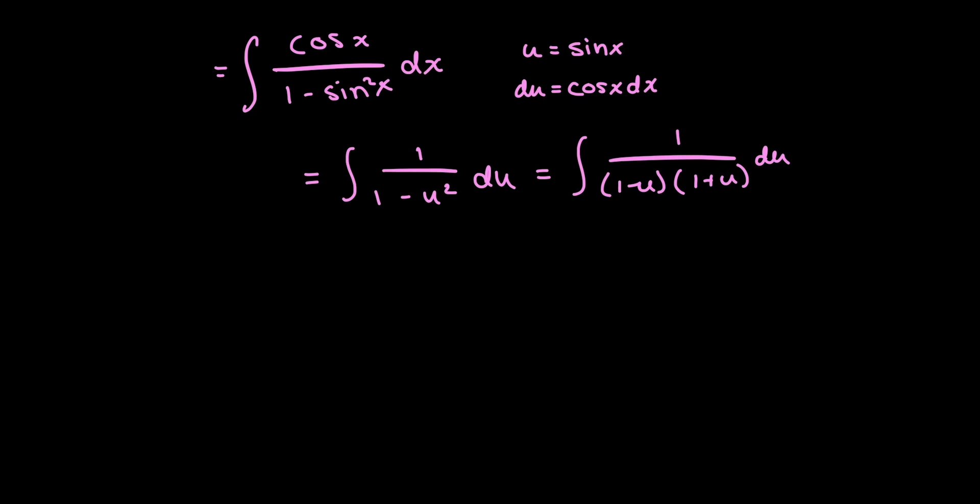And now splitting this up into two fractions, I get a over 1 minus u plus b over 1 plus u du. And now I'm going to combine this into one fraction to be able to solve for my constants a and b.